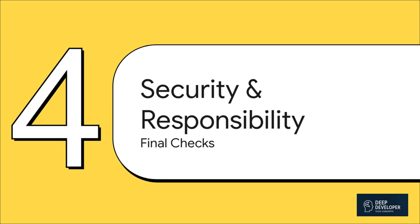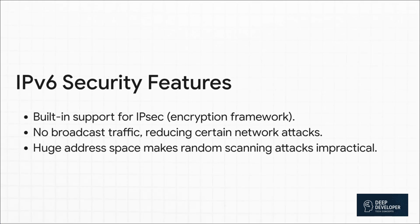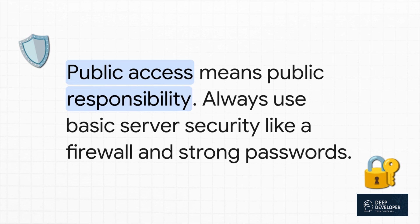This brings us to the last and honestly the most important part of this whole thing. When you give your laptop a real public IP address, you're also taking on some new responsibilities — so we have to talk about security. The great news is that IPv6 was built from the ground up with security in mind. It has built-in support for powerful encryption. But the biggest feature is just its sheer size. The number of possible IPv6 addresses is a number with 38 zeros — it's so mind-bogglingly huge that it's practically impossible for attackers to randomly scan for computers to attack, which is a really common technique on IPv4. They can't attack you if they can't find you. But that does not mean you can get lazy. If you have a vulnerability in your web app and an attacker finds your address some other way, they can still cause trouble. Public access means public responsibility. That means you still need to use a firewall, have strong passwords, and keep all your software up to date.